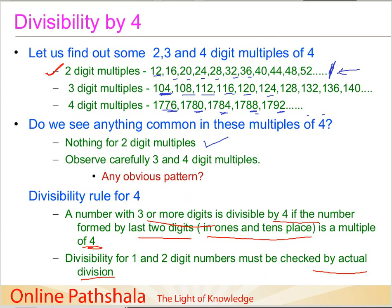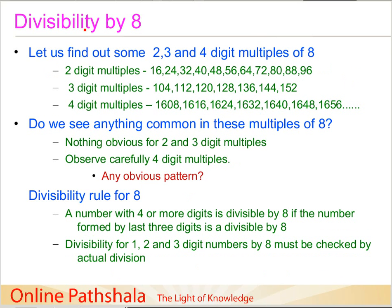Now let's understand divisibility by 8. We follow the same method and find two-digit, three-digit, and four-digit multiples of 8. The two-digit multiples are 16, 24, 32, 40, and so on. Three-digit multiples include 104, 112, 120, and so on. Four-digit multiples include 1648, 1616, and so on.